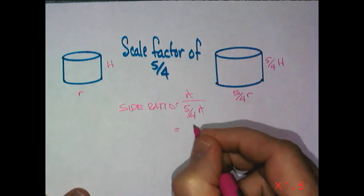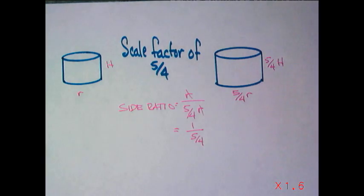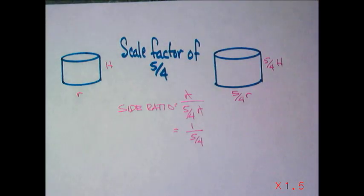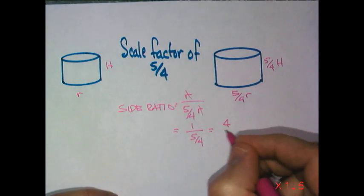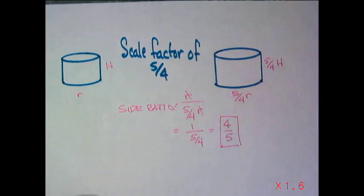And nor would you leave it as simplifying the r's as 1 to 5 fourths. That also, I'm going to get upset with you. Simplified, simplified, simplified. So that's 1 divided by 5 fourths, or 1 multiplied by the reciprocal of 5 fourths, which that simplifies to 4 to 5.